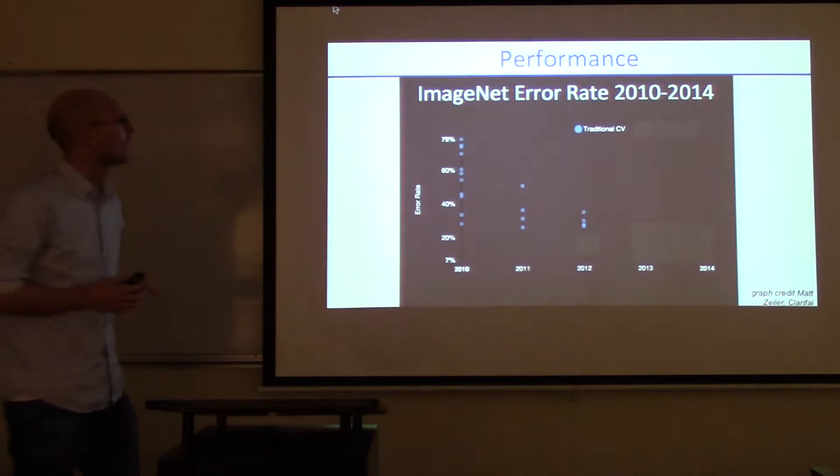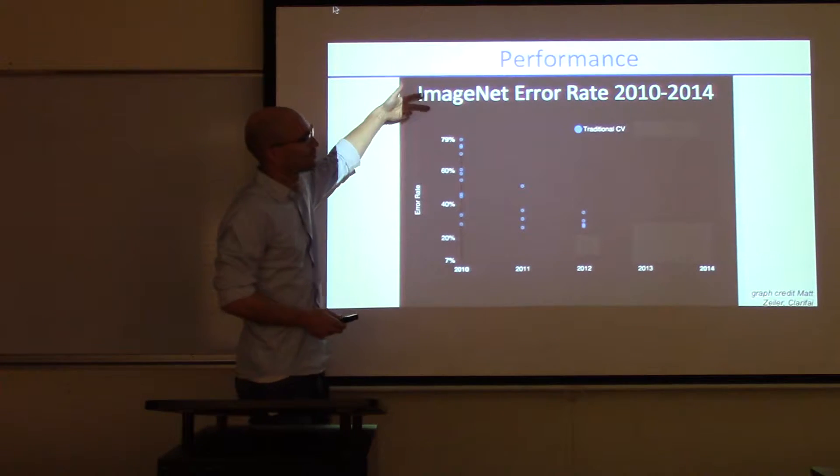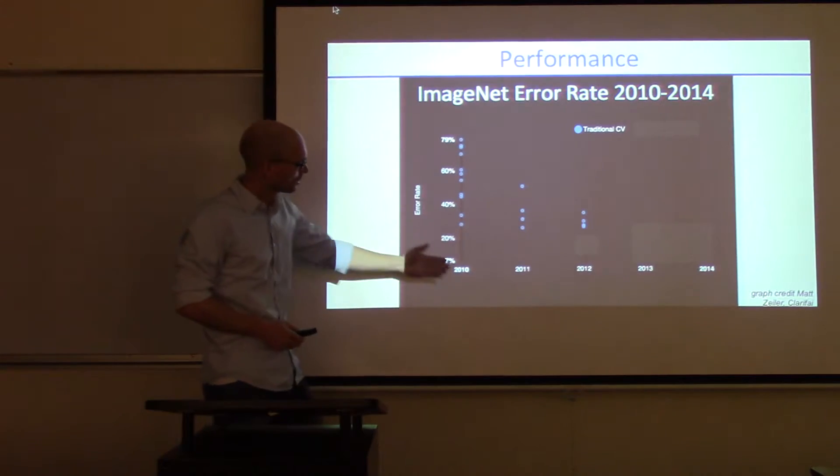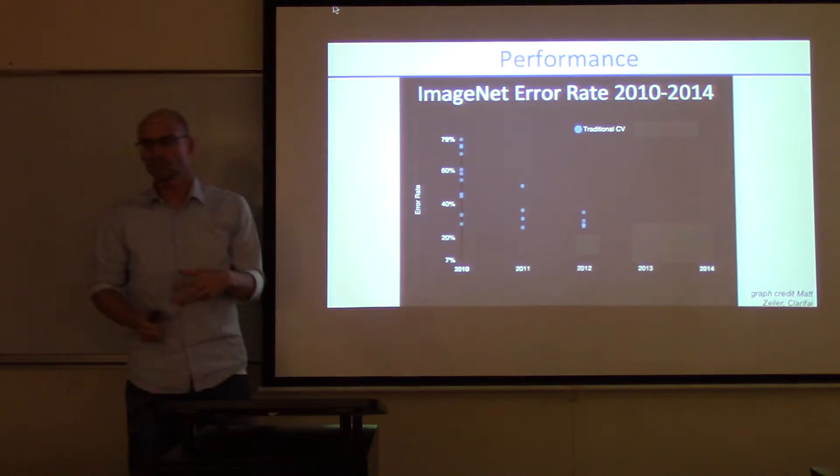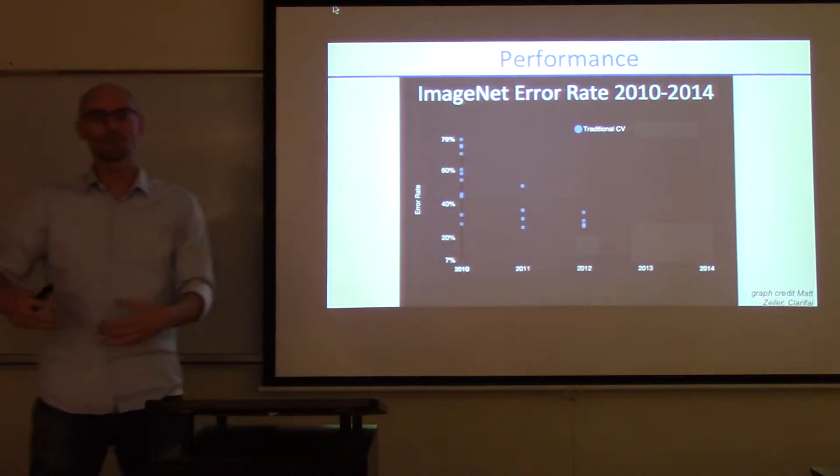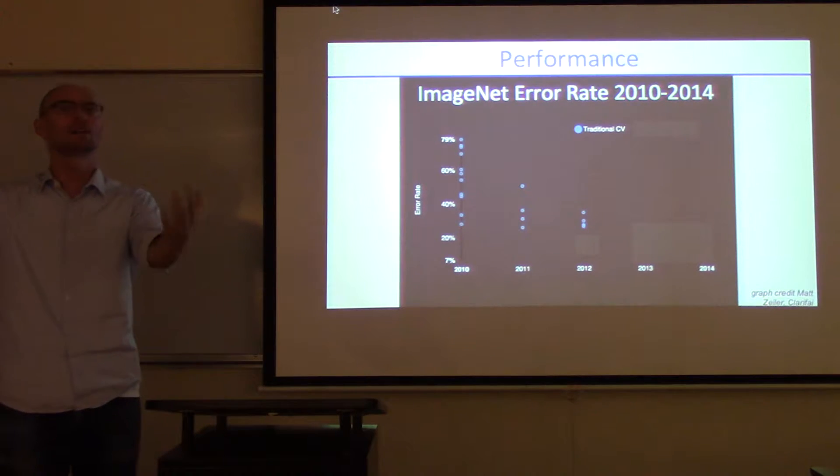ImageNet is the standard computer vision benchmark. Horizontal axis is time, vertical axis is error rate, so lower is better. Every year there's a competition. You can submit your software that gets fed a few thousand images for which your software then has to recognize what's in the image.